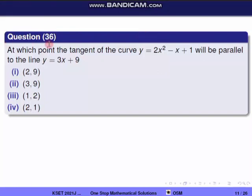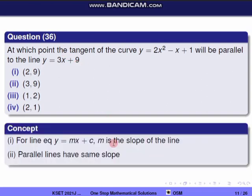Question 36. At which point is the tangent of the curve y equal to 2x² minus x plus 1 parallel to the line y equal to 3x plus 9? For a line equation y equal to mx plus c, m is the slope, and parallel lines have the same slope.